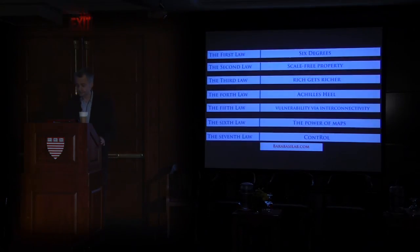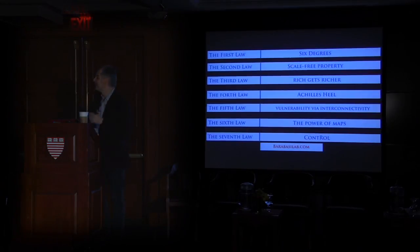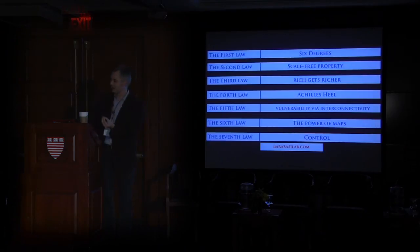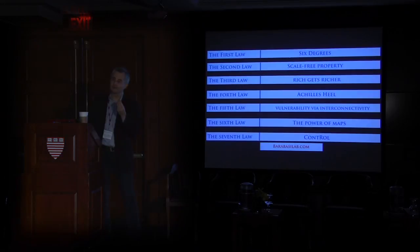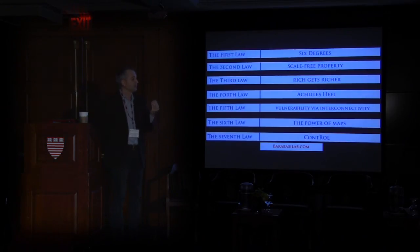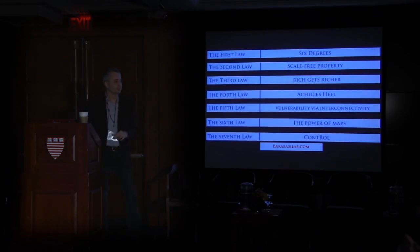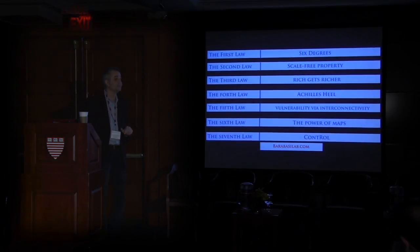These five or six laws give you the idea that networks are not random. Not random means they have quantifiable principles — behind each law there is a formula that quantifies what we're talking about. If you understand these principles, you have a huge advantage in understanding the complex world around us. The rest of the speakers will put these ideas into practice and show how they can be applied in other domains. Thank you very much.